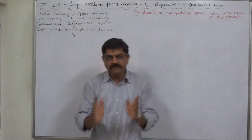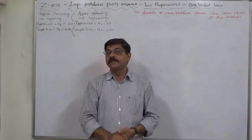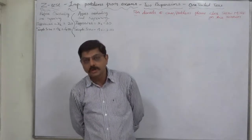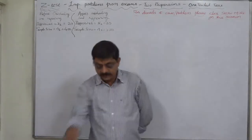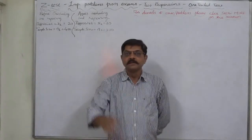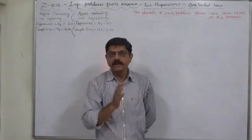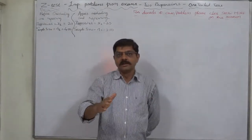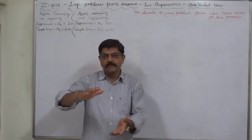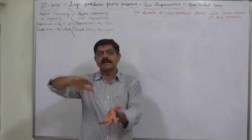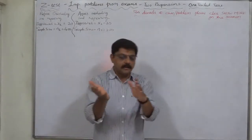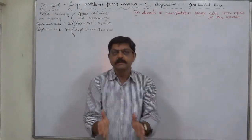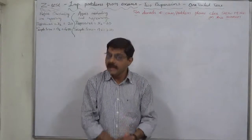But if this null hypothesis of no difference is rejected, then our new conclusion is that the machine has improved — because we need to check whether the machine has improved or not. So the alternative hypothesis must be: the machine has improved.